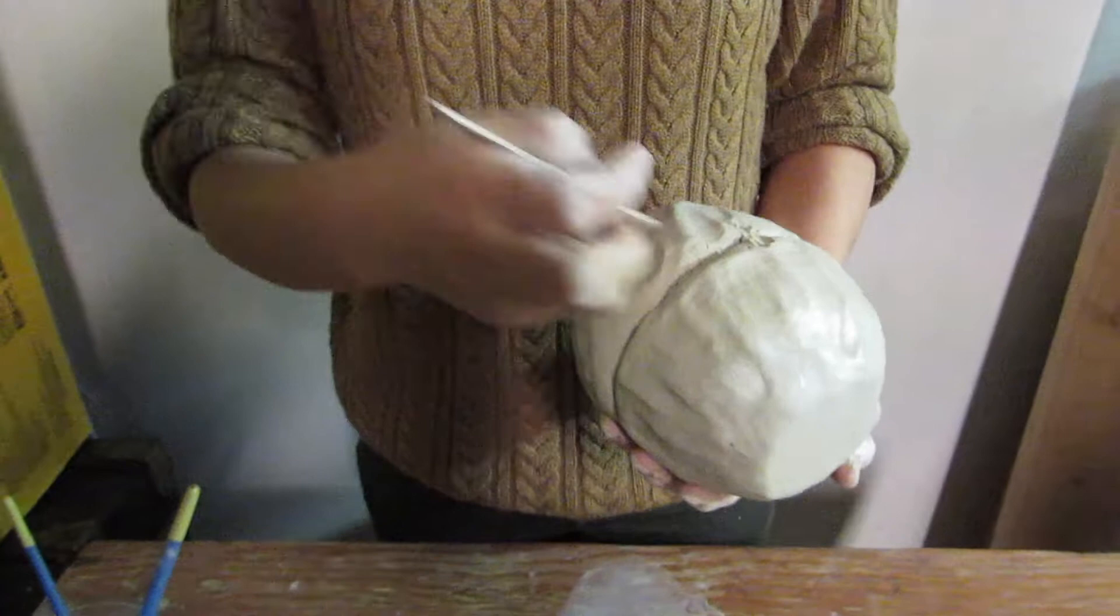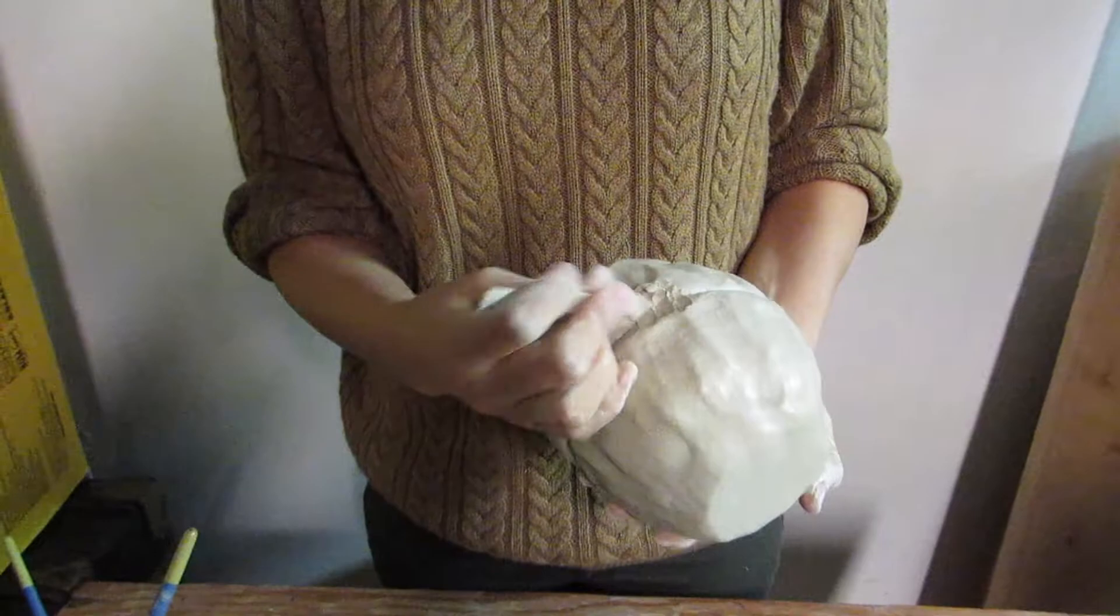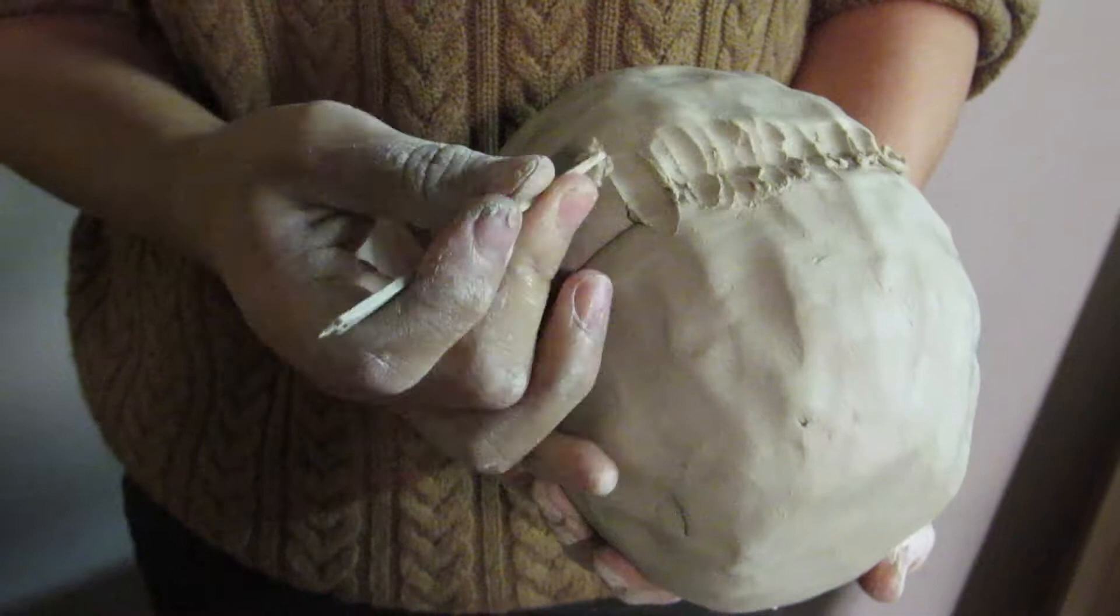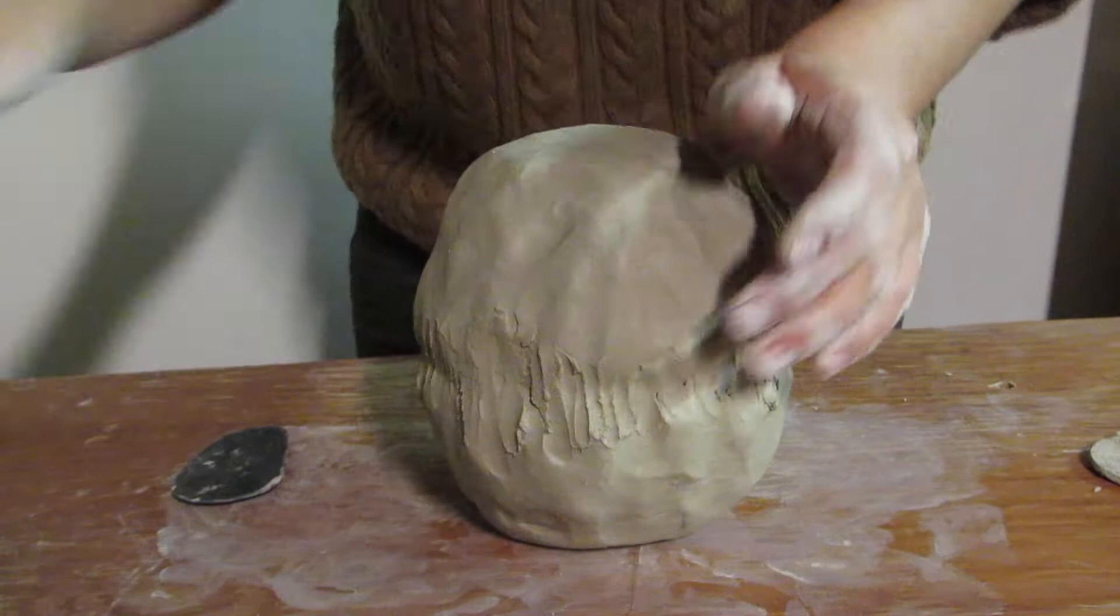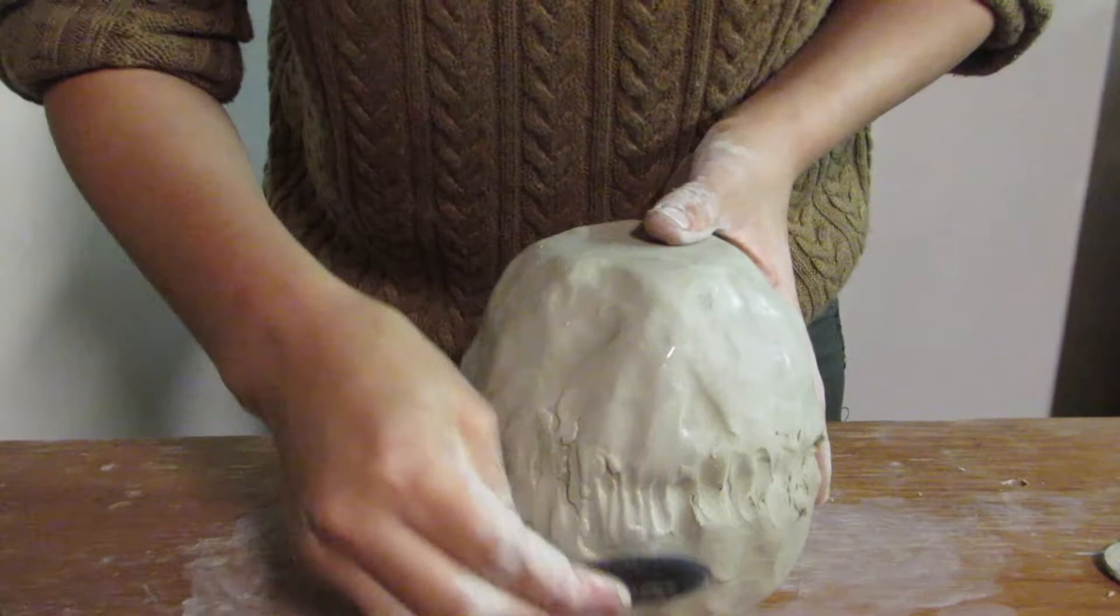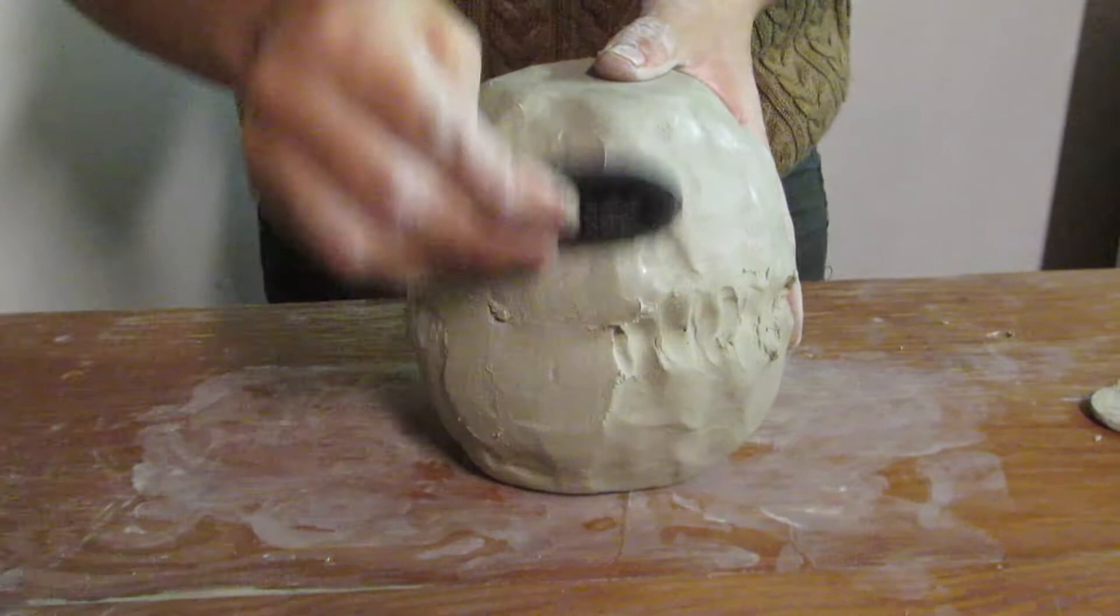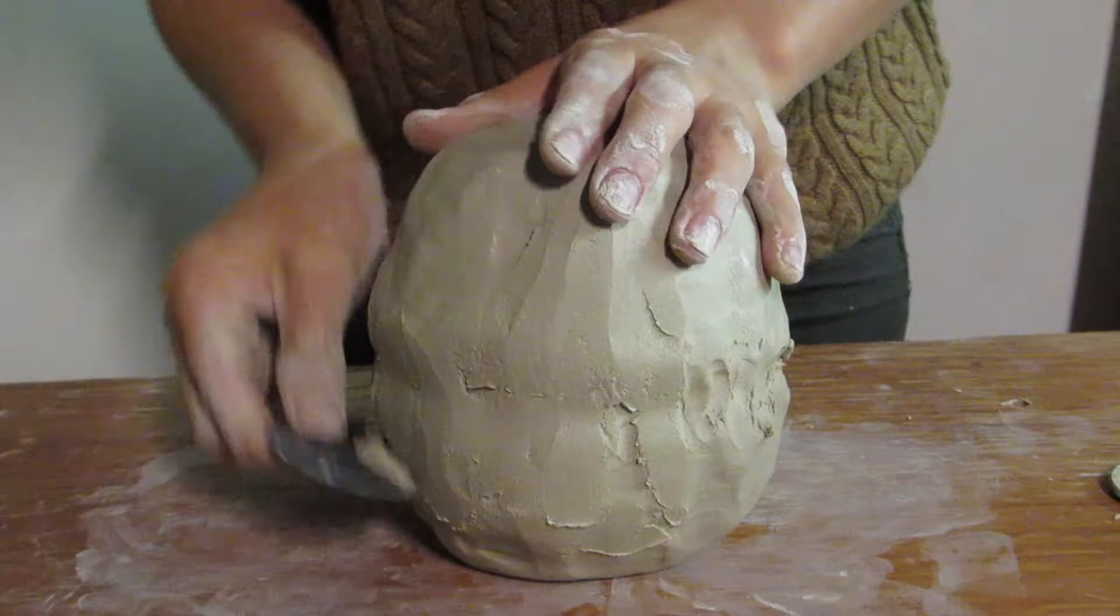After we're done scratching, now we're going to score all around, which is the method they call slip and score. So we're going to use the popsicle all around. It doesn't have to be beautiful because we're going to smooth it out at the end. But make sure you attach it really good. So after we're done using the popsicle stick, we're going to use some water and we're going to use the rib to smooth out the part, to smooth it all out. All around. To cover the connection.